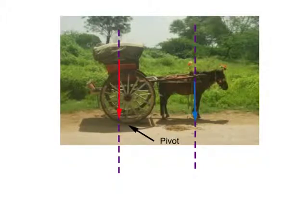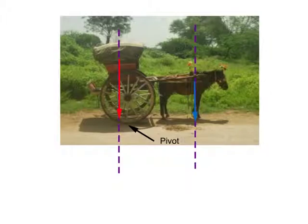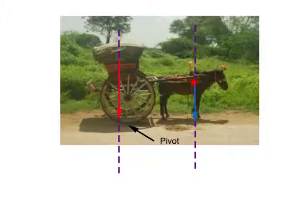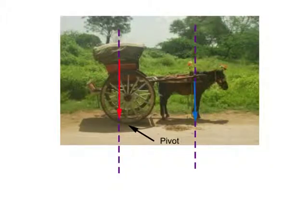Moment of force plays an important role in deciding what load a donkey can carry. The donkey does not know the concept of moment, but a human being should. For the load shown here, the weight acts somewhere around the centre of gravity. This weight produces an anti-clockwise moment about the pivot at this point. The weight of the donkey and other parts of the cart will contribute to the clockwise moment about the same pivot. As long as the clockwise moment is bigger than the anti-clockwise moment, the cart and the donkey are safe.